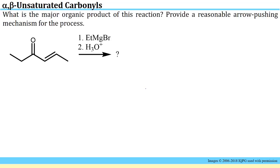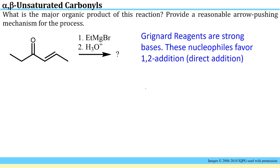If you've read the lesson, you'll know that the particular site — carbon two or carbon four — that is attacked by a nucleophile depends on the particular type of nucleophile involved. Here we have a question asking what the major product is for this reaction and asking us to provide a reasonable arrow-pushing mechanism. The nucleophile is provided by a Grignard reagent. We know that Grignard reagents are strong bases, and the favorability for either 1,2 or 1,4 addition has to do with how unstable the nucleophile is. A strong base is very unstable, and those unstable nucleophiles tend to favor 1,2 addition.